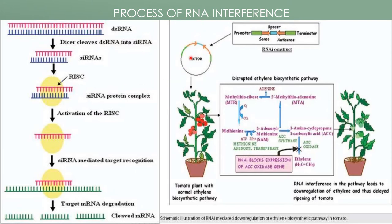Metabolic engineering also uses the gene knockdown process through RNA interference. The double-stranded RNA of interest is taken, and Dicer cleaves this double-stranded RNA into siRNA. This siRNA attaches to the RNA-induced silencing complex, also called RISC. The sense strand of the siRNA is removed, and the RISC protein complex is activated. The antisense siRNA then binds to the target mRNA and degrades it through cleavage of the mRNA, thereby blocking that pathway.